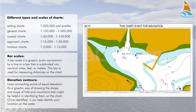Elevation contours. These are lines connecting points of equal elevation. They're a graphical way of showing the shape and slope of hills and mountains that might be helpful in identifying them on the chart. Once identified, they can help identify your location on the water.